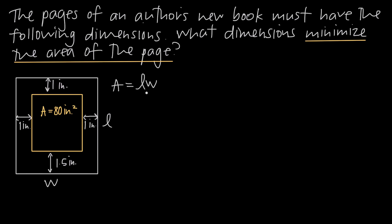Remember that our next step is always to get the optimization equation in terms of just one variable. Right now it's in terms of two variables — we have length and width — so we're going to need to eliminate one of them. In order to eliminate one of these variables, we're going to use the constraint equation. We need to write another equation in terms of length and width so that we can eliminate one of these variables.